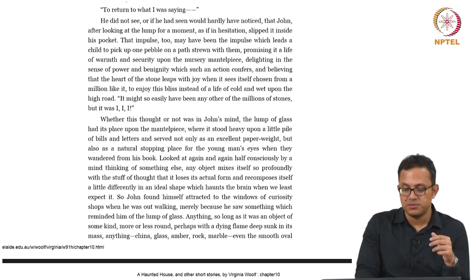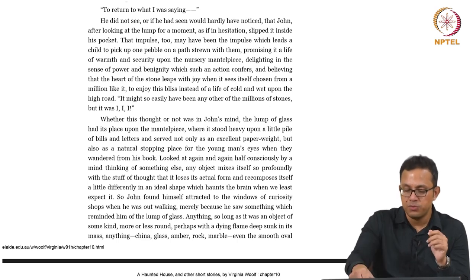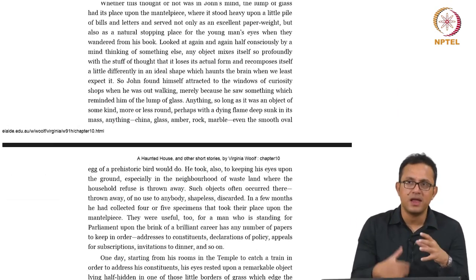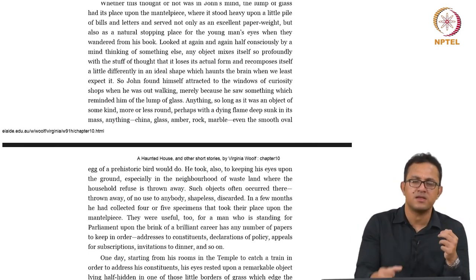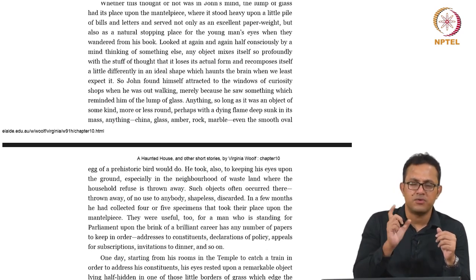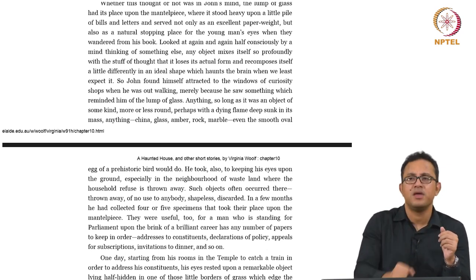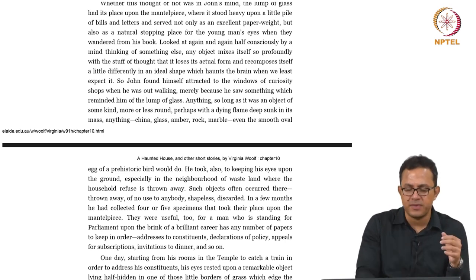Anything round — perhaps with a dying flame deep sunk in its mass — anything china, glass, amber, rock, marble, even a smooth oval egg of a prehistoric bird would do. Again, look at how the entire fetish formation is taking shape, because anything he sees connects him to the lump of glass. The lump of glass becomes something like an archetype in his mind — the archetype of the solid object — and everything around him serves as a reminder of that original archetype picked up from the beach.